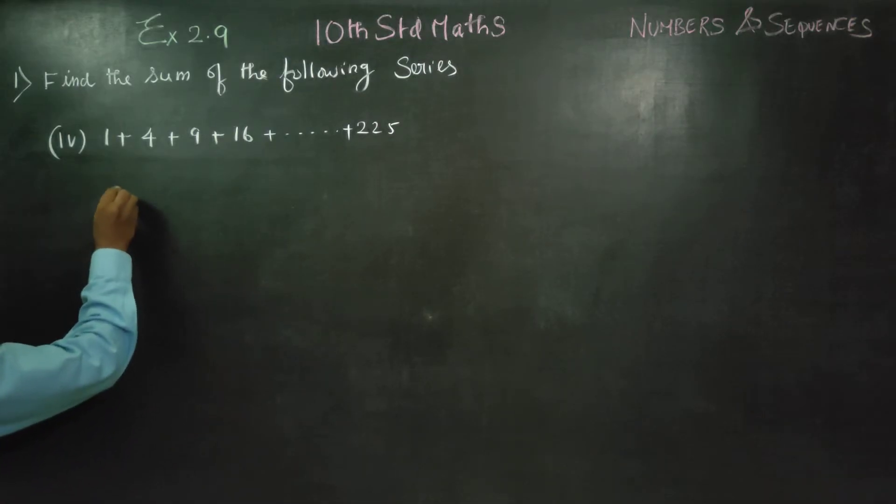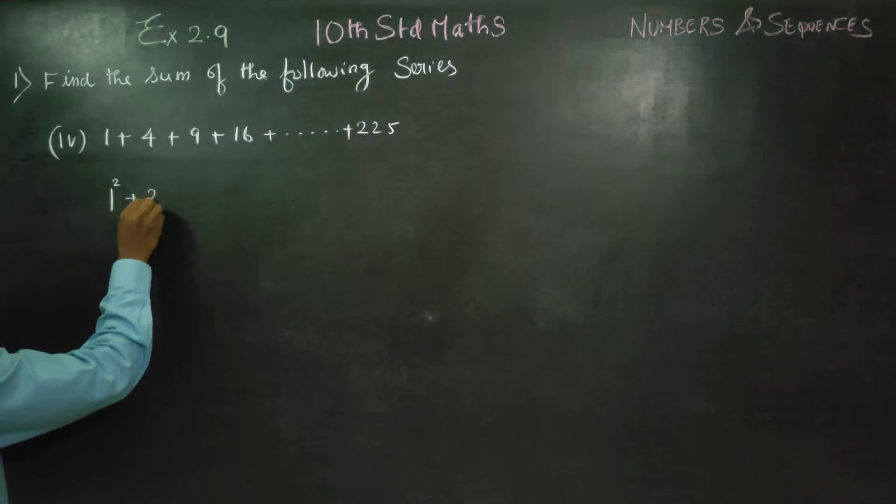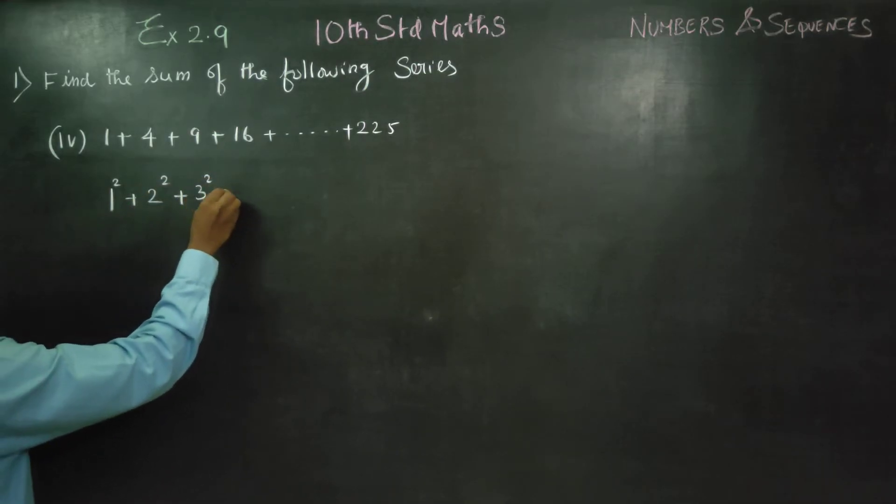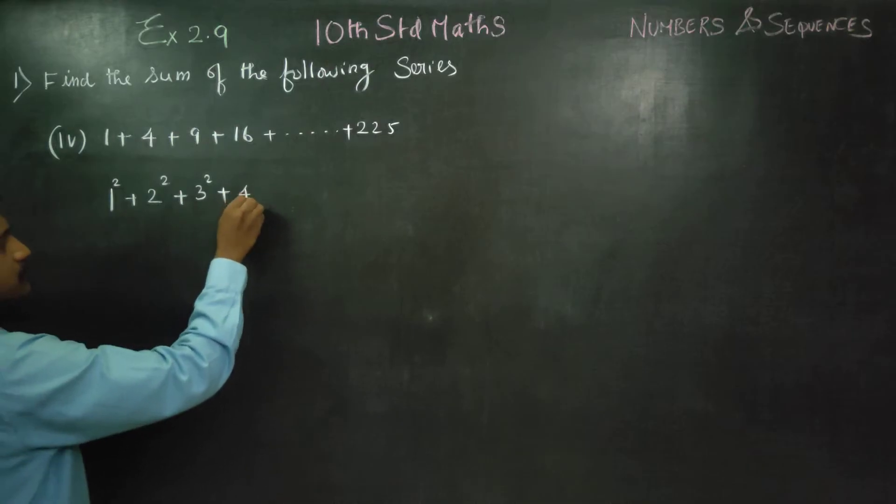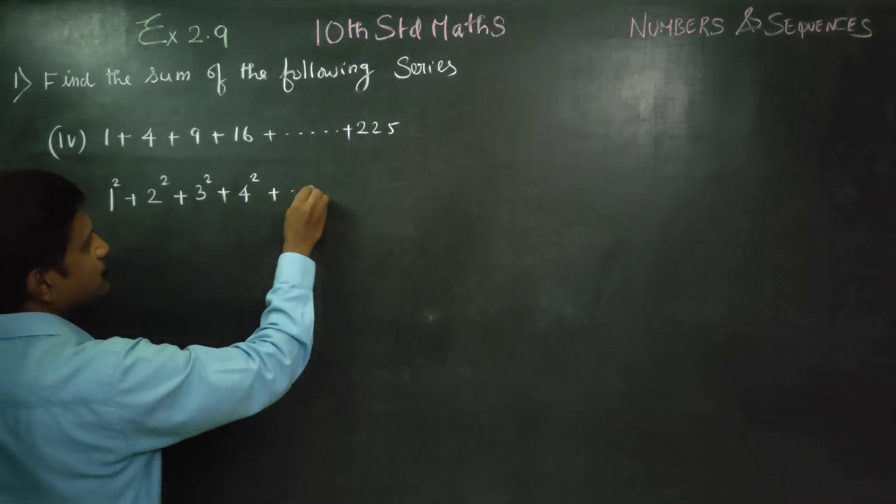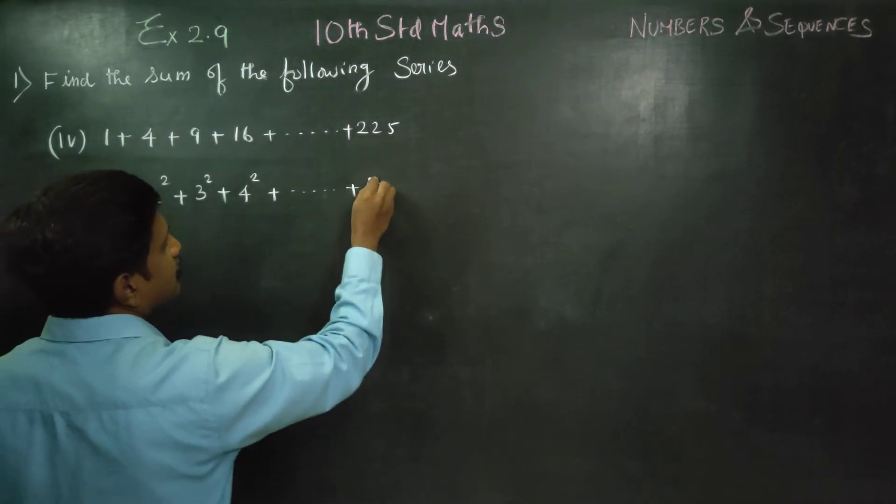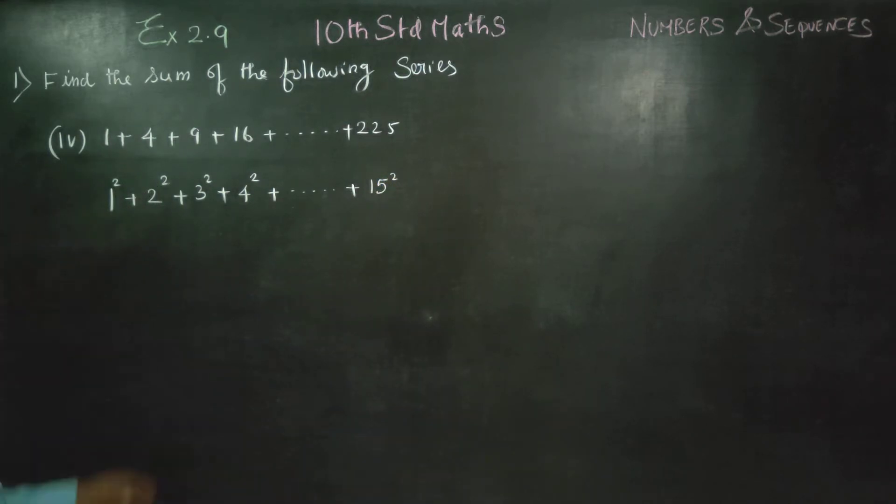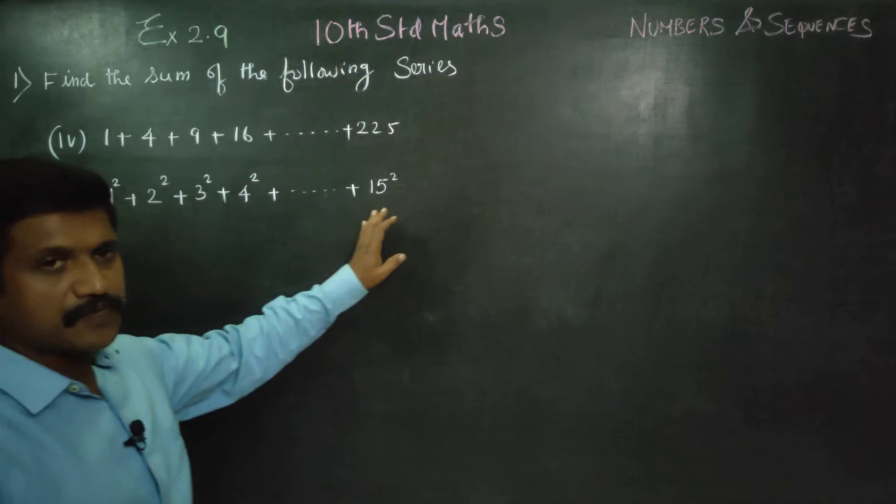This can be written as 1 squared. 4 can be written as 2 squared, 9 can be written as 3 squared, 16 can be written as 4 squared, 225 can be written as 15 squared. So, 1 squared, 2 squared, 3 squared up to 15 squared.